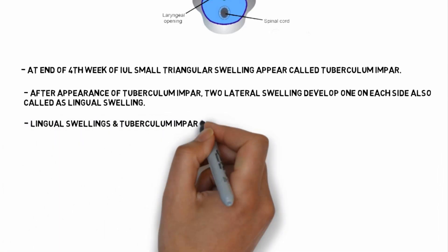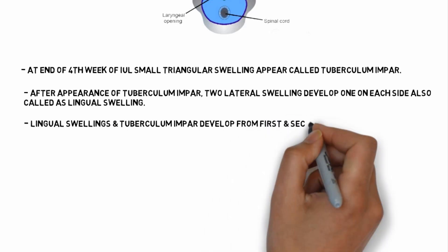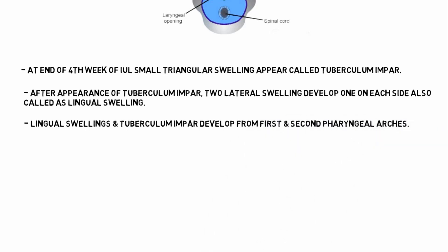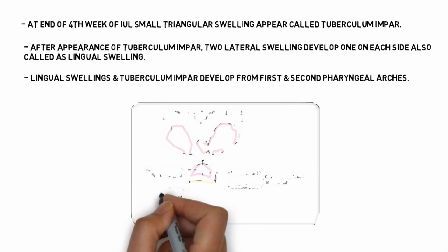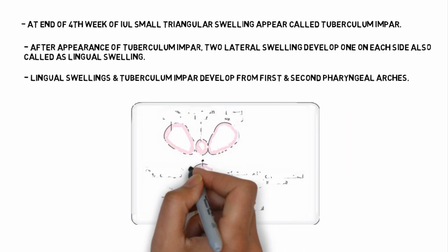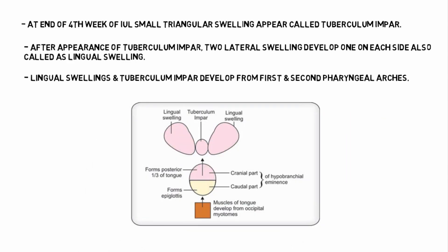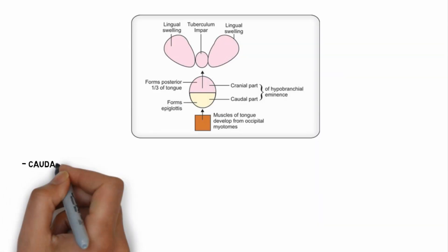Lingual swelling and tuberculum impar develop from first and second pharyngeal arches. As you can see in this image, there is a tuberculum impar and two lingual swelling. And you can see there is a hypobranchial eminence with cranial part and caudal part.